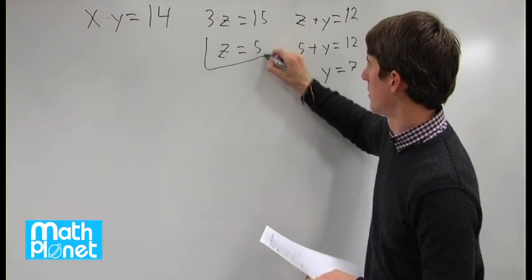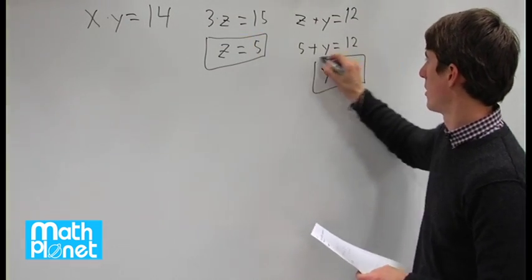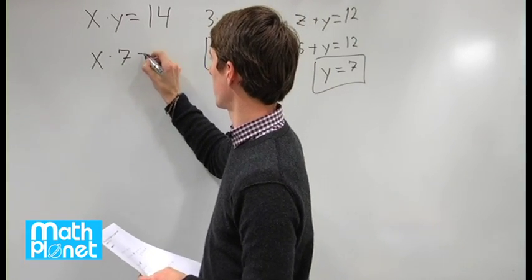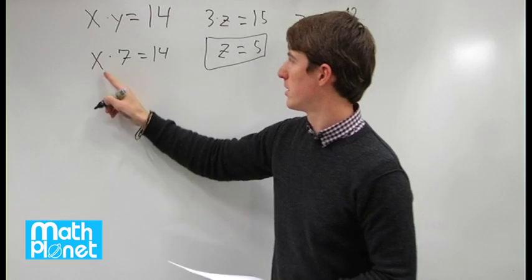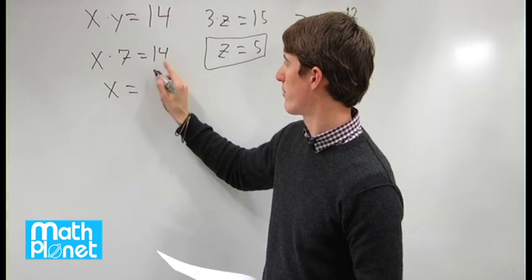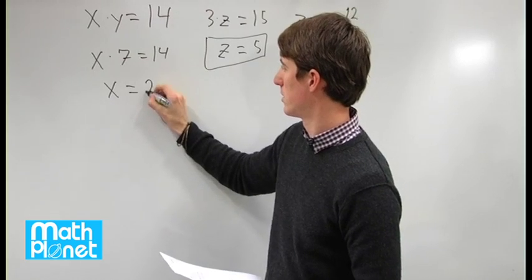So we're already two down. One more, plugging this in here gives us x times 7 equals 14. Now we can just solve for x by dividing both sides by 7. x is equal to 14 divided by 7 is 2.